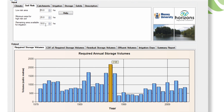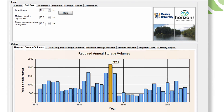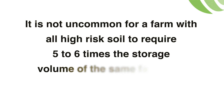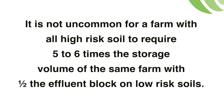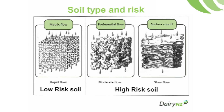In fact, it is not uncommon for a farm with all high-risk soil to require five to six times the storage volume of the same farm with half the effluent block on low-risk soils.